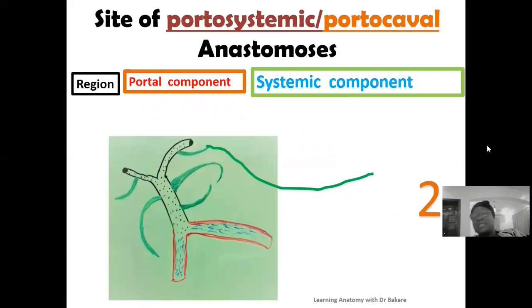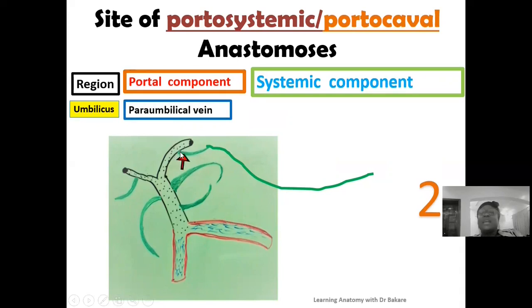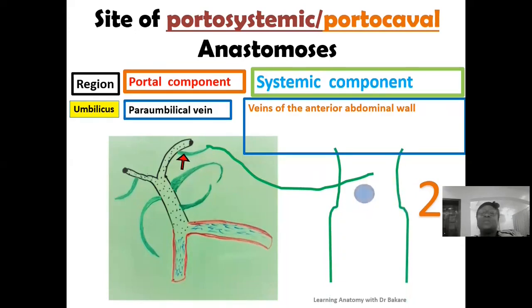The second region where portal systemic anastomosis is created is at the umbilicus. The portal component will be from the paraumbilical vein, which drains into the left branch of the portal vein. The systemic component is from the veins of the anterior abdominal wall, which are divided into three sub-regions: veins from above the umbilicus (superior epigastric vein and lateral thoracic vein), veins from below the umbilicus (superficial epigastric vein and inferior epigastric vein), and lateral veins (posterior intercostal vein and lumbar vein).